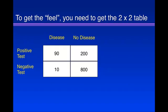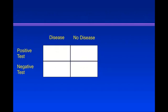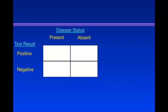Here is the 2x2 table for diagnostic test performance. Let's take the numbers away and look at the basic structure. There's a column for those with disease and a column for those without disease. There's a row for those with positive tests and a row for those with negative tests. We could build this table with slightly different labels: disease status — present or absent; test result — positive or negative.